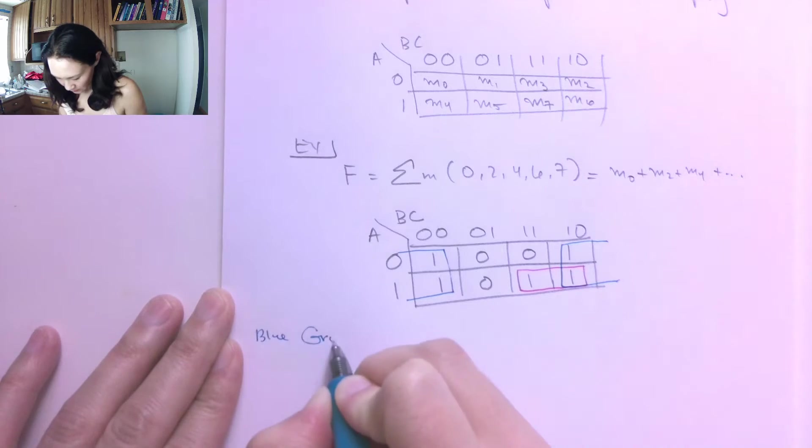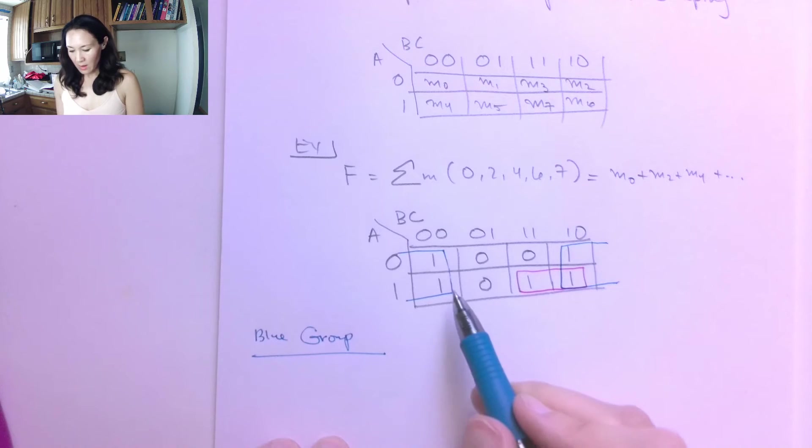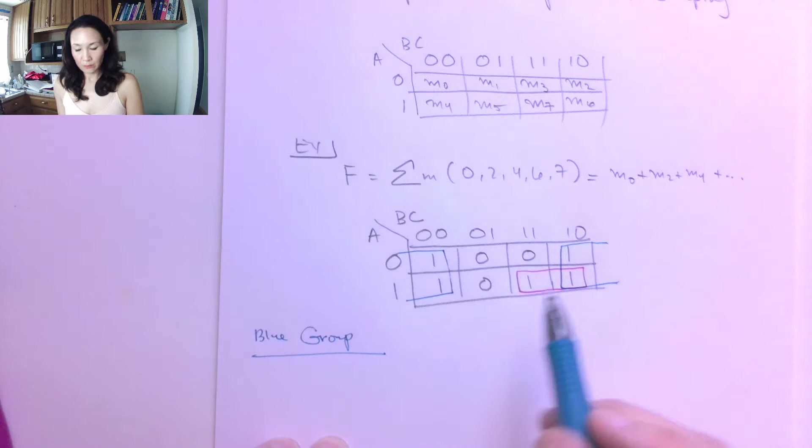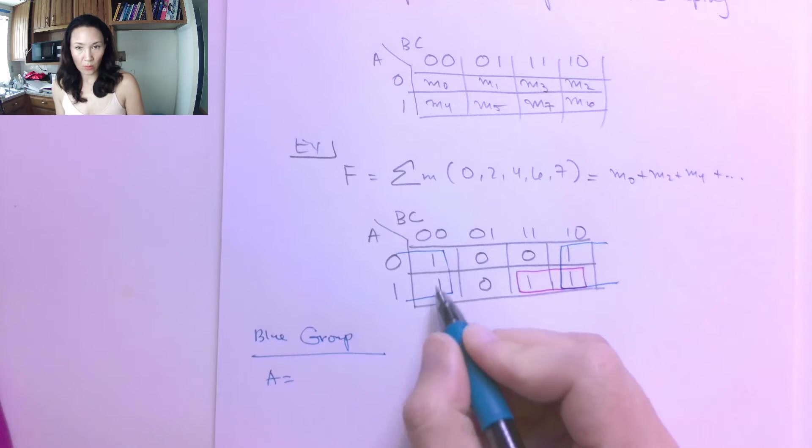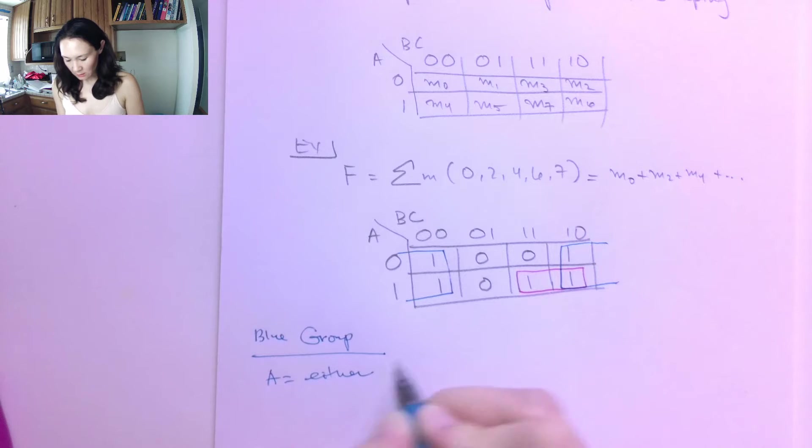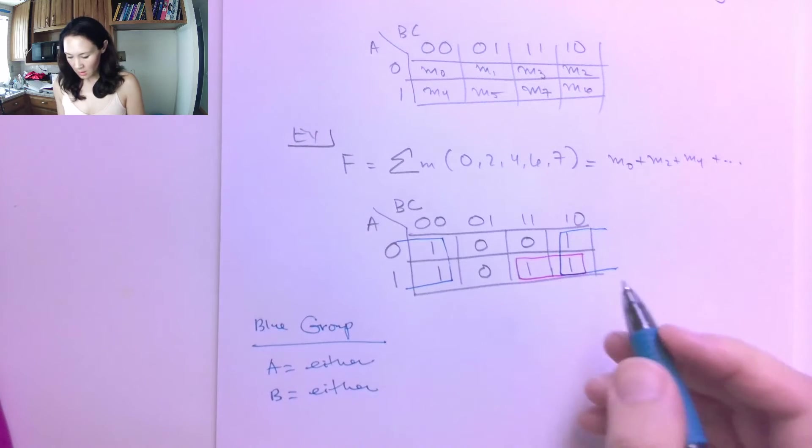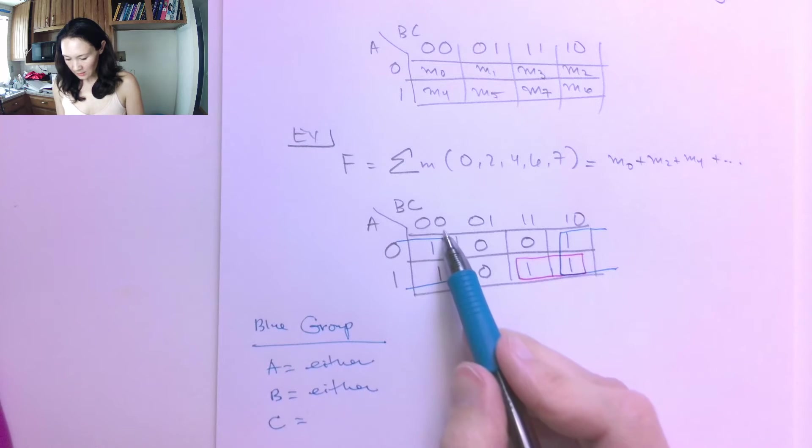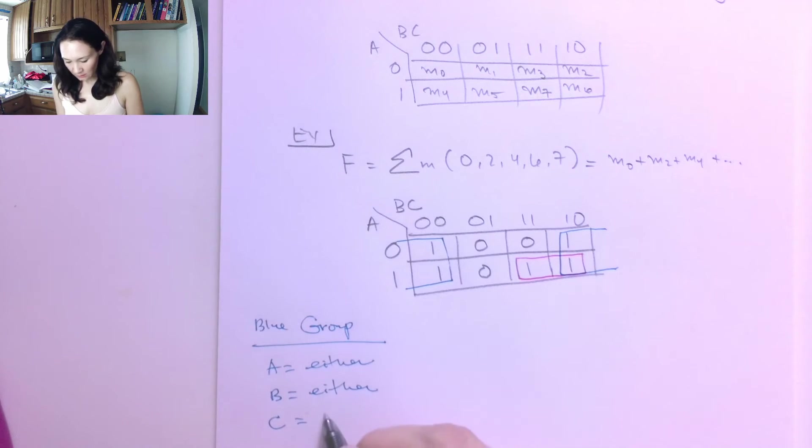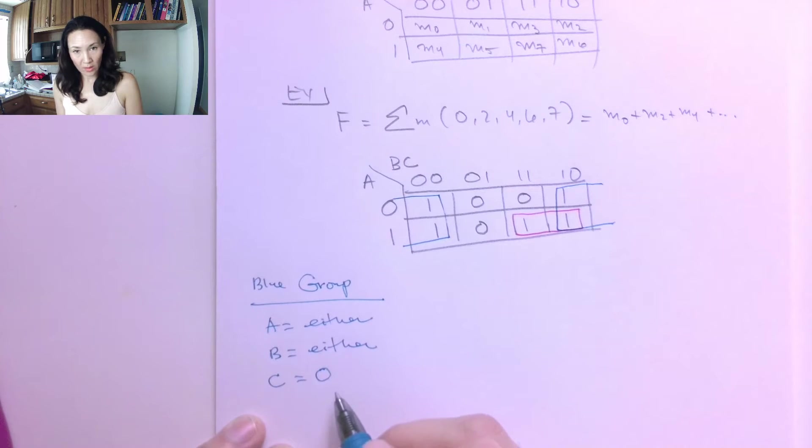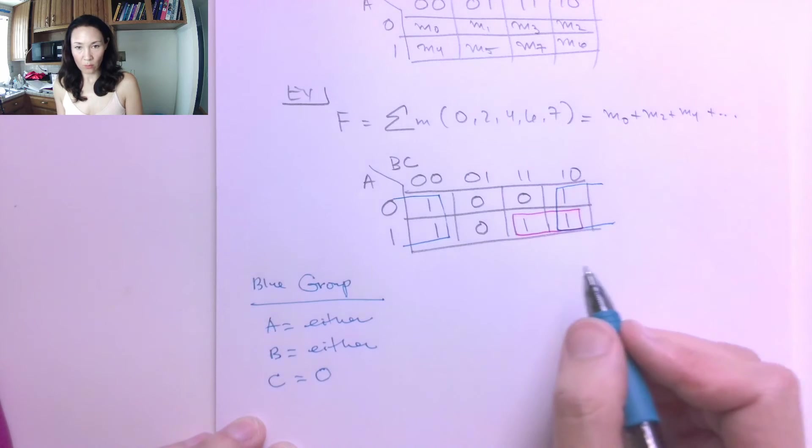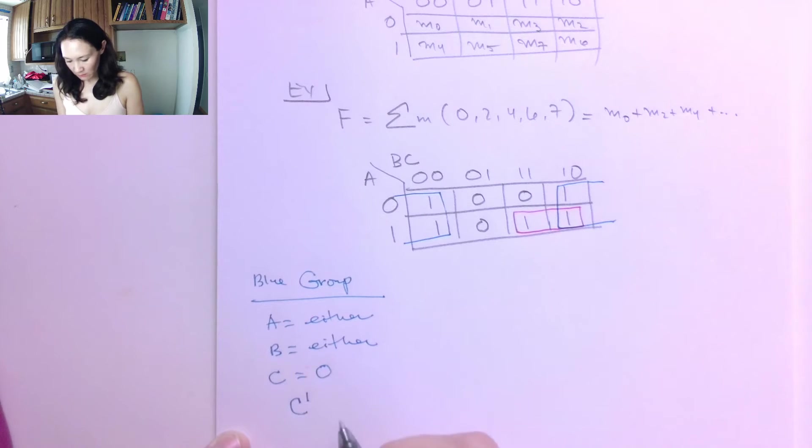So our blue group, for our blue group, what makes this blue group true? Well, we have that A can be either 0 or 1, and we'll have a 1 in our blue group. So this is going to be either. We have B is 0 or 1. So this is actually also either. And then for C, like we mentioned before, C is 0 in this column and 0 in this column. So that means that C is equal to 0 is basically the only condition that matters. And A and B can be anything, and we'll always have a 1 as long as C is equal to 0. So in our sum of products form, this is denoted as the literal C naught.